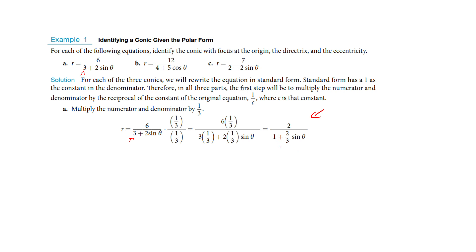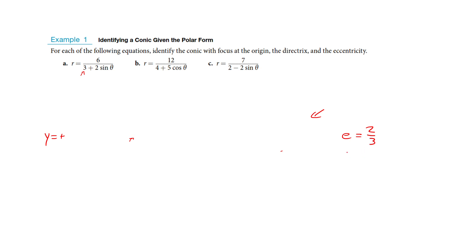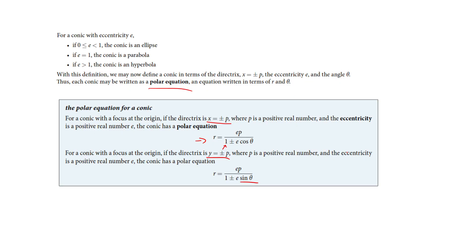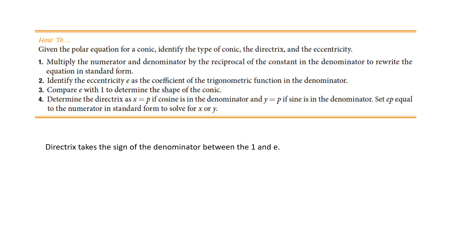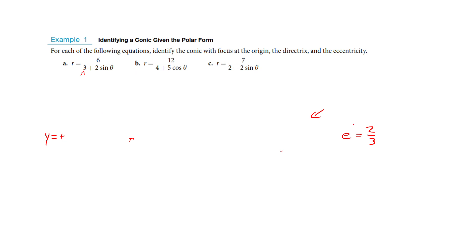Now this form gives us all the information we need. We have sine in the denominator, so the directrix is going to be a y — a horizontal line. And it's positive, so we know the directrix is positive. The eccentricity is the number in front of the trig function once the denominator equals 1, so the eccentricity is two thirds. Since two thirds is between 0 and 1, this conic section is an ellipse.